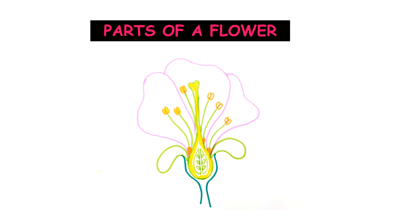What is a flower? A flower is a specialized shoot in which the leaves have been modified into floral parts. These floral parts are what we are now going to see in detail.